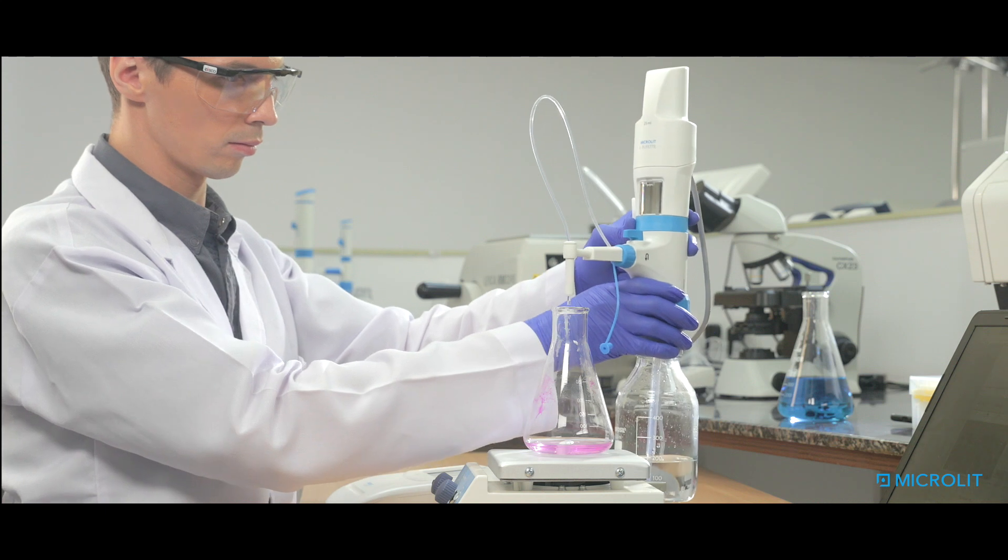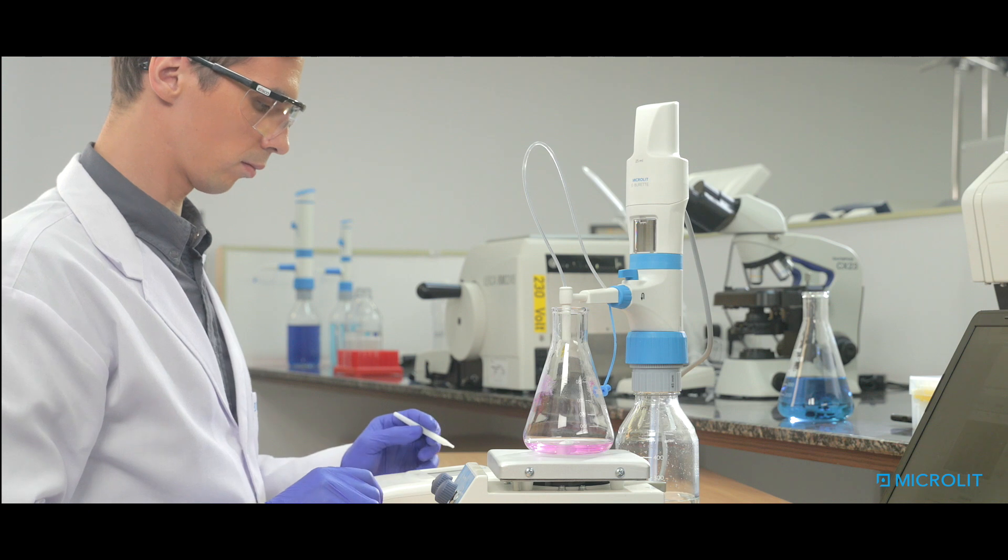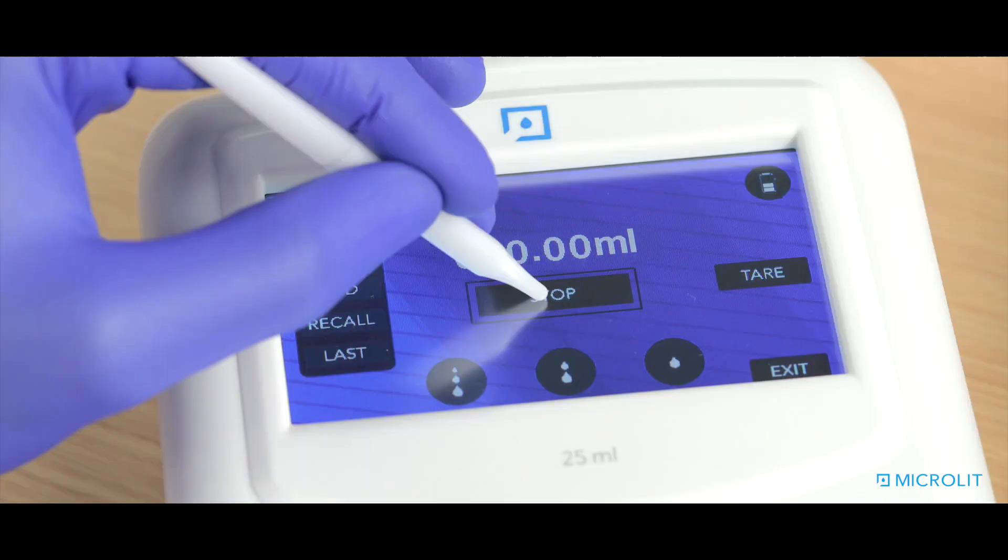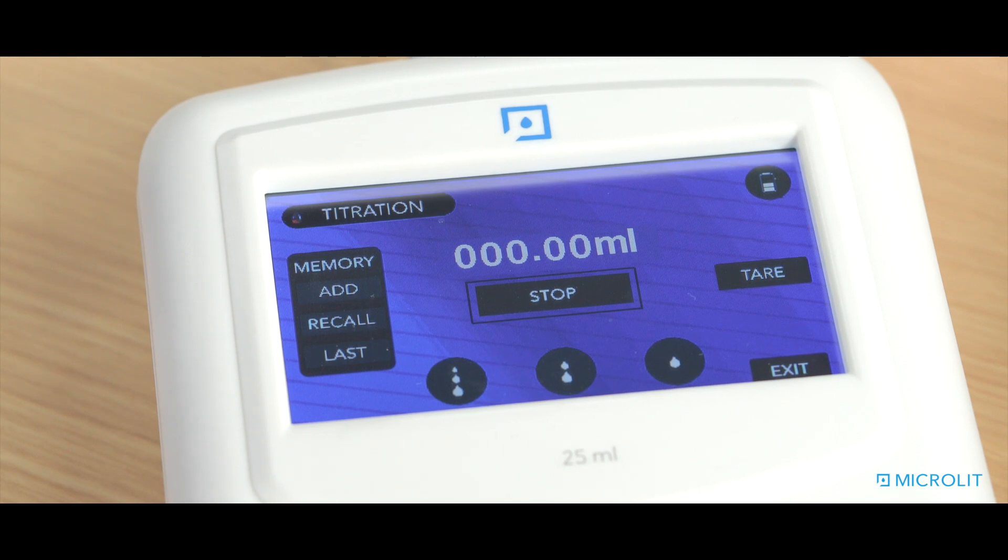Now place the discharge tube orifice against the inner wall of a suitable receiving vessel. From the titration screen, click the fill button to fill the barrel and press the stop button to stop filling.